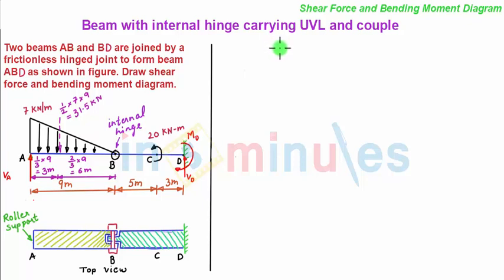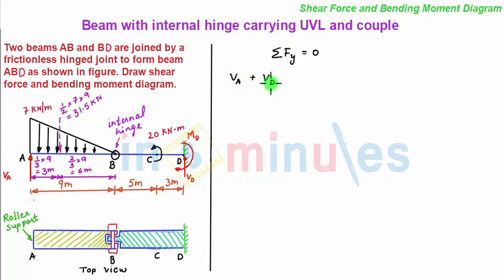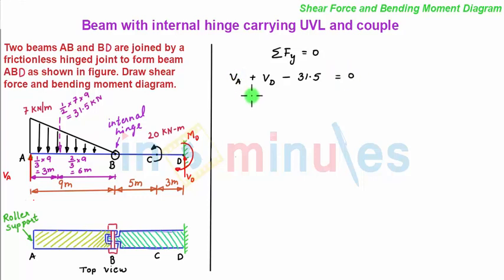Next we take our second static equilibrium equation: summation of Fy equals zero. We see that there are two upward vertical support reactions VA and VD. Our sign convention is upward force is positive and downward force is negative. So we write VA plus VD minus the uniformly varying load of magnitude 31.5 kN equals zero. Upon substituting VA as 21 kN, we get VD as 10.5 kN — positive, meaning upward, confirming our assumed direction.